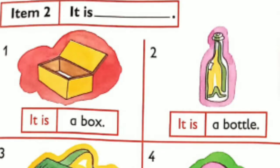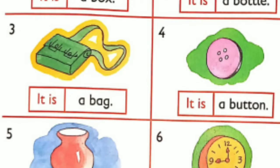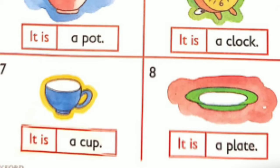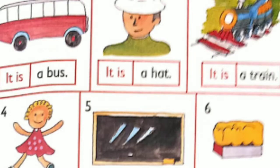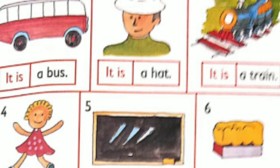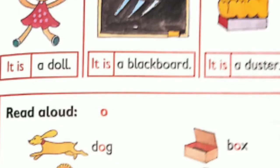Now let us make sentences. It is a box. It is a bottle. It is a bag. It is a button. It is a pot. It is a clock. It is a cup. It is a plate. It is a bus. It is a hat. It is a train. It is a dog. It is a blackboard. It is a duster. Review words: dog, doll, pod, box.